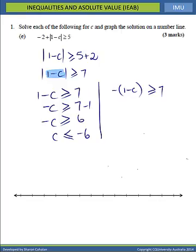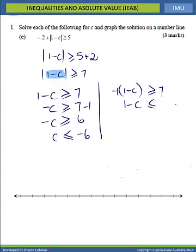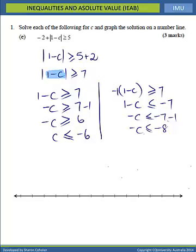For the second inequality, we divide throughout by the negative 1 in front of the bracket, changing the direction of the inequality, giving 1 minus C less than or equal to negative 7. Then negative C is less than or equal to negative 7 minus 1, so negative C is less than or equal to negative 8. Dividing again by negative 1 and flipping the sign back, we get C is greater than or equal to 8.